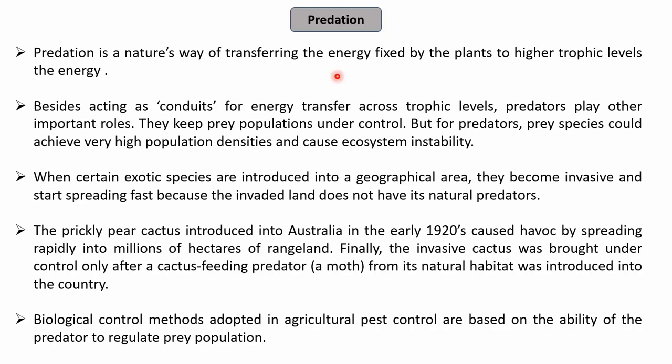Predation is a natural way of transferring the energy fixed by plants through photosynthesis to higher trophic levels. In ecology, energy transfer always takes place from the first trophic level to the next higher trophic level, and this happens through predation. Herbivores transfer energy from plants to carnivores, and so on. Even herbivores are predating on plants, and carnivores are predators for herbivores. This is how predation works as a natural way of transferring energy from lower to higher trophic levels.